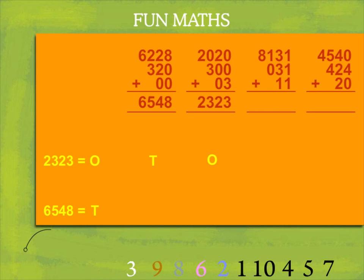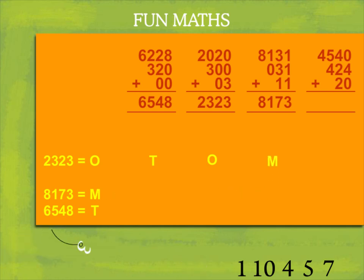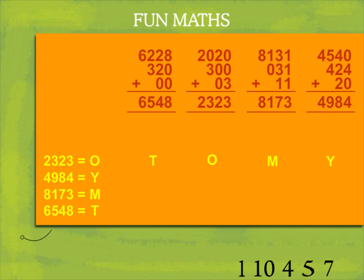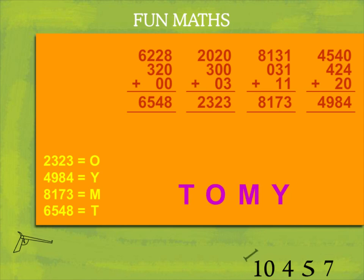The third one, let's add it — it becomes 8173 and this is M. The last one adds up to 4984 and this is Y. So T-O-M-Y is the answer.